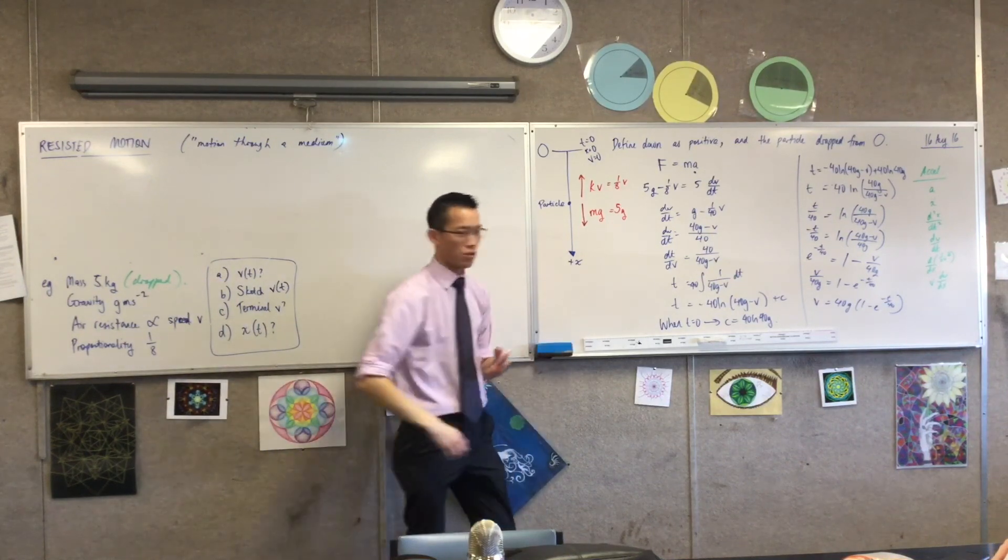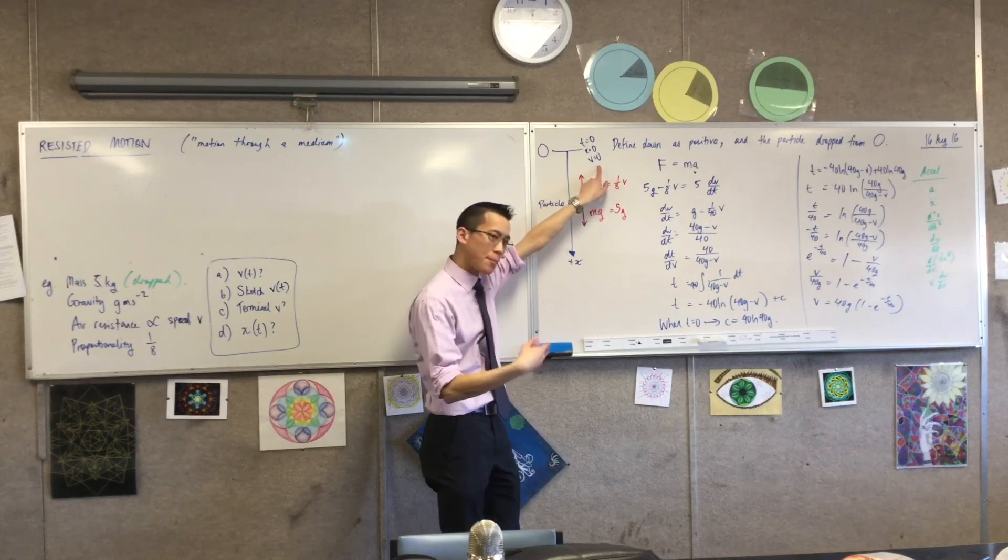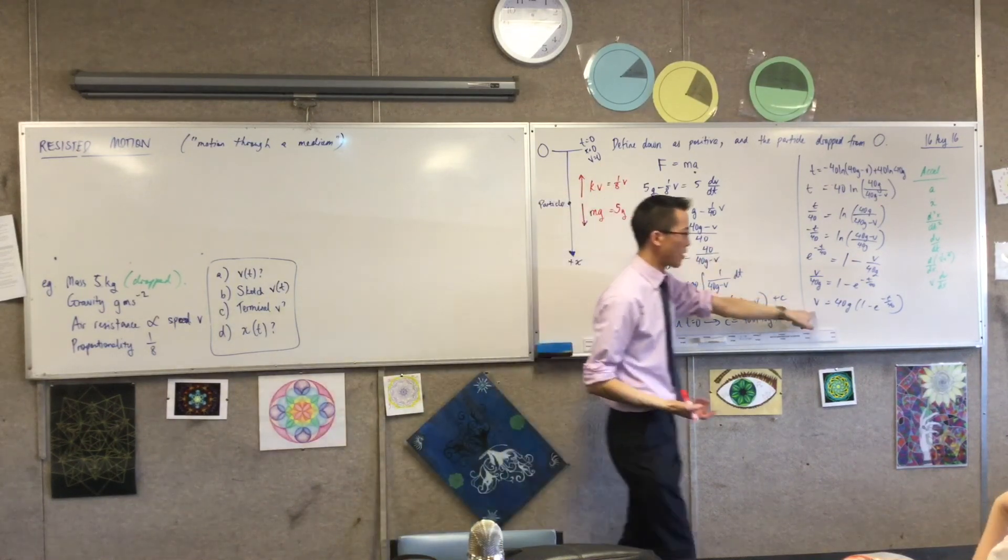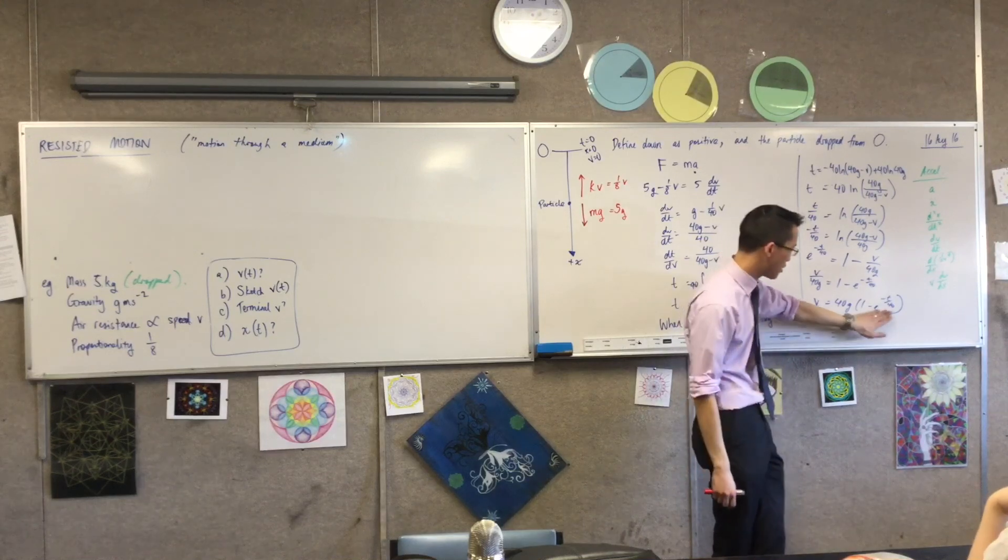when you go through what the picture looks like, when time is equal to 0, I already know what the velocity is. So what happens to the velocity as time gets bigger, and bigger, and bigger? What happens to this whole term over here?